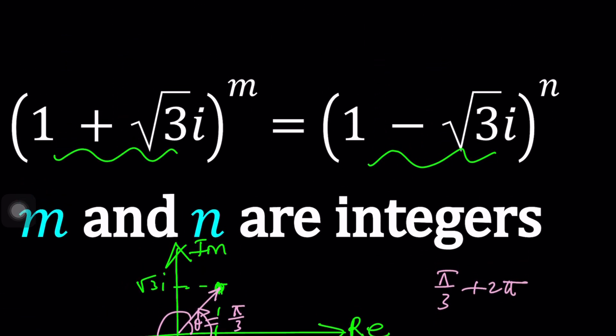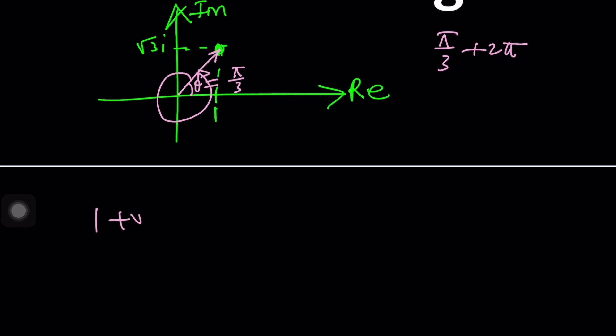But where do we go from here? Well we can write 1 + √3i using the modulus, the distance from 0 which is 2 units, and then multiply this by e^(i·θ) which happens to be π/3 in this case.